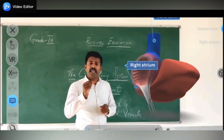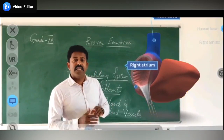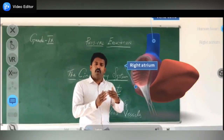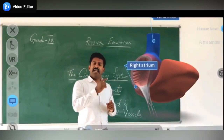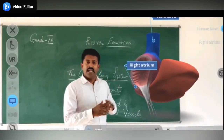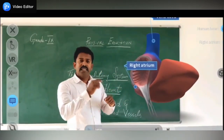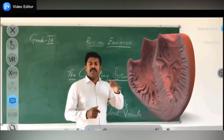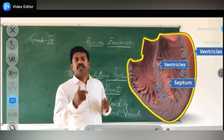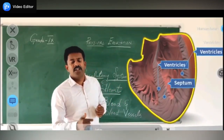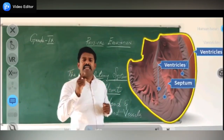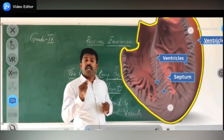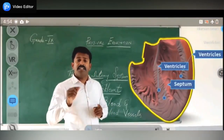to the first chamber — the right auricle. The impure blood comes into the first chamber and fills it. Once filled, the tricuspid valve opens automatically. The blood moves from the right auricle to the right ventricle — that is, the deoxygenated blood moves from the first chamber to the second chamber.